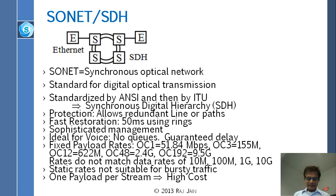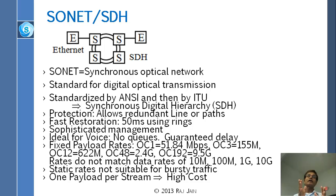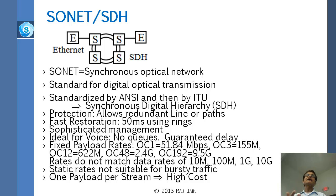Once it went to ITU, which is heavily dominated by Europeans, the system was changed, and what came out from there is called SDH — Synchronous Digital Hierarchy — which is different than SONET but similar, just like T1 and E1 are similar but different. What does SONET do? SONET has been very successful, so successful that anybody who wants to go and talk to a carrier has to say, can you do as good as SONET? And so the Ethernet guys have to do the same thing.